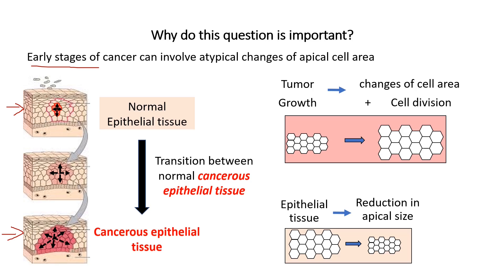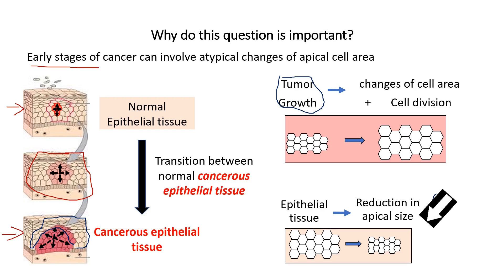This stage is very important to study, and we want to know what is happening. We know that while the tumor grows, we can have cell division and changes in cell area, and we generally focus on that. But I want us to focus also on what is happening around the tumor — the tissue around the tumor is going to reduce in apical area.